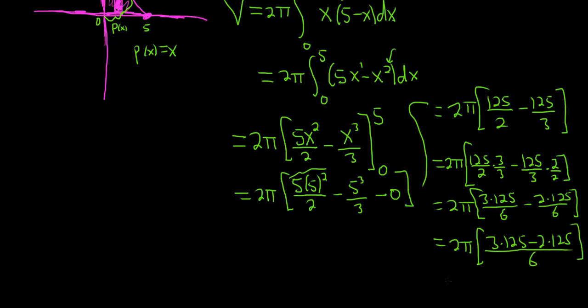So 3 times 125 minus 2 times 125 is 1 times 125, which is just 125 over 6. And then the 2 on the outside here cancels with the 6. So this is 125 pi, and it's all over 3.